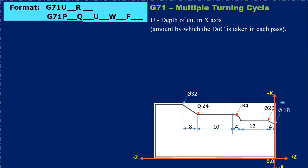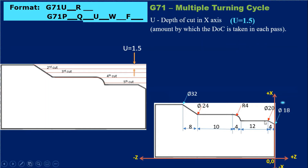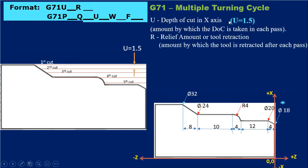U stands for the depth of cut in the X-axis. I've taken the example of a depth of cut of 1.5 mm — here is an enlarged view showing what the depth of cut means. It means that in one stroke, 1.5 mm of material can be removed. So every cut — whether four, five, or six cuts — will be 1.5 mm each until we achieve the required size. The R alphabet stands for the relief amount or tool retraction.